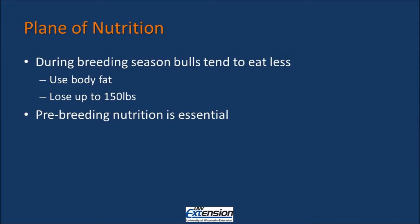The plan and nutrition of the bull is also important. During the breeding season, the bull will tend to eat less since his mind is predominantly focused on breeding. Because the bull is not eating as much, he can use up his body stores of fat and lose up to 150 pounds of weight. It is important that our bulls come into the breeding season with a little extra condition so that by the end of the season, they are not under condition.